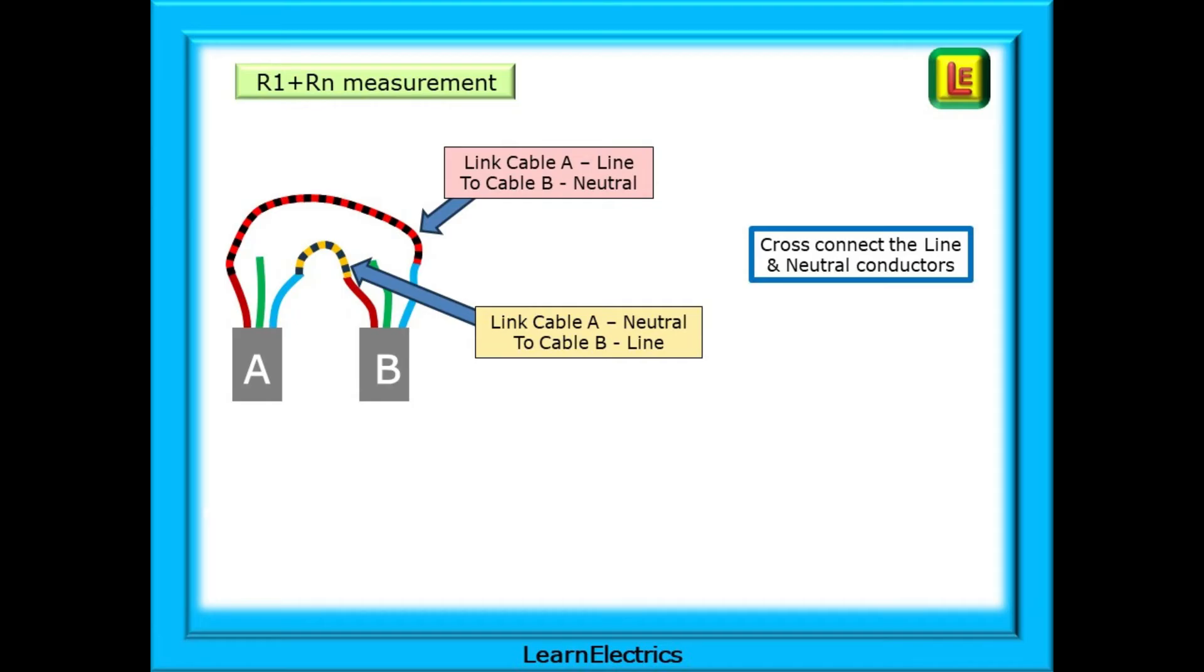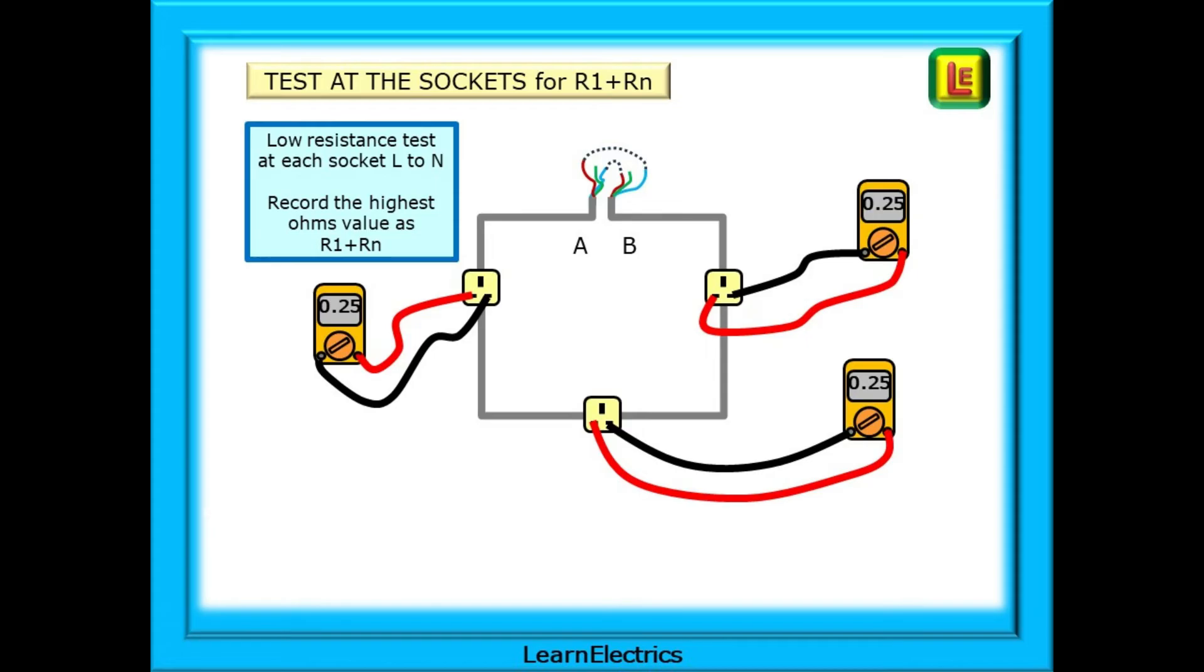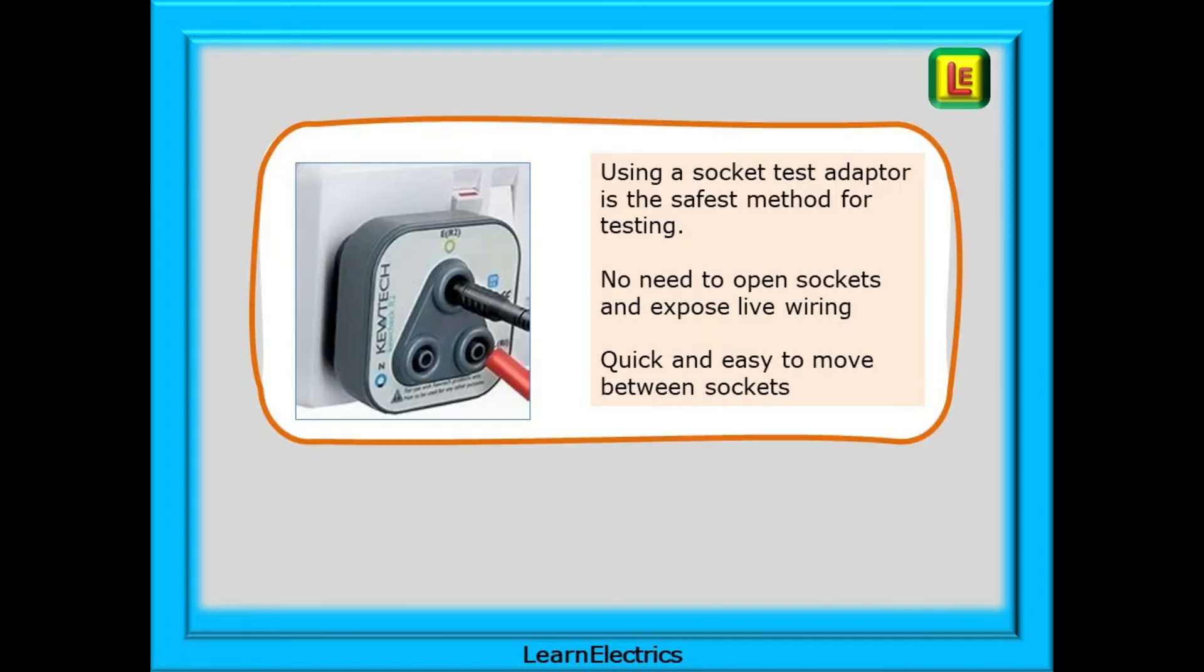Now forget about the consumer unit and go to the sockets. Carry out a low resistance ohms test at each socket between line and neutral. Record as you go and use the highest value in ohms as you test each socket. If your meter has a test lead with a 3 pin plug on the end, it won't do this test without you repositioning the jack plugs in the back of the test meter for each test. Far better, I think, to use the leads with a 4mm jack plug on each end and a socket test adapter. Using a socket test adapter is the safest method for testing. No need to open sockets and expose live wiring and it's quick and easy to move between sockets.